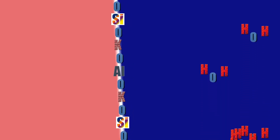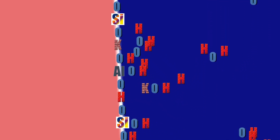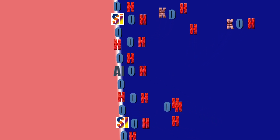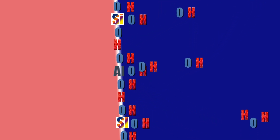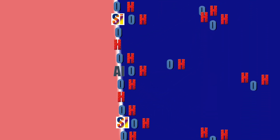Welcome back geology fans. Last episode we saw how various elements are ripped from crystals to become solutes in water in chemical weathering, but once ripped will an element or compound go anywhere or remain nearby to possibly end up in a new mineral form?